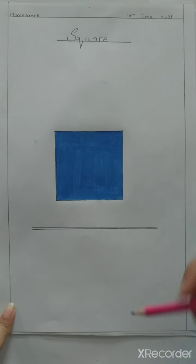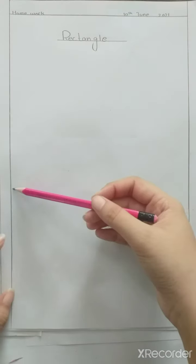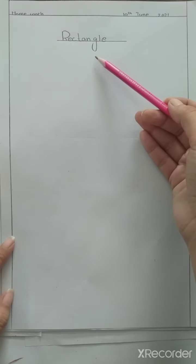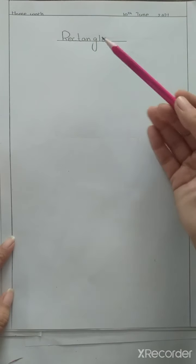Students, you must add a finishing line at the end. Now students, go to the next page. Students, prepare the page with margin line, date line, mention the date, and give the Rectangle heading.